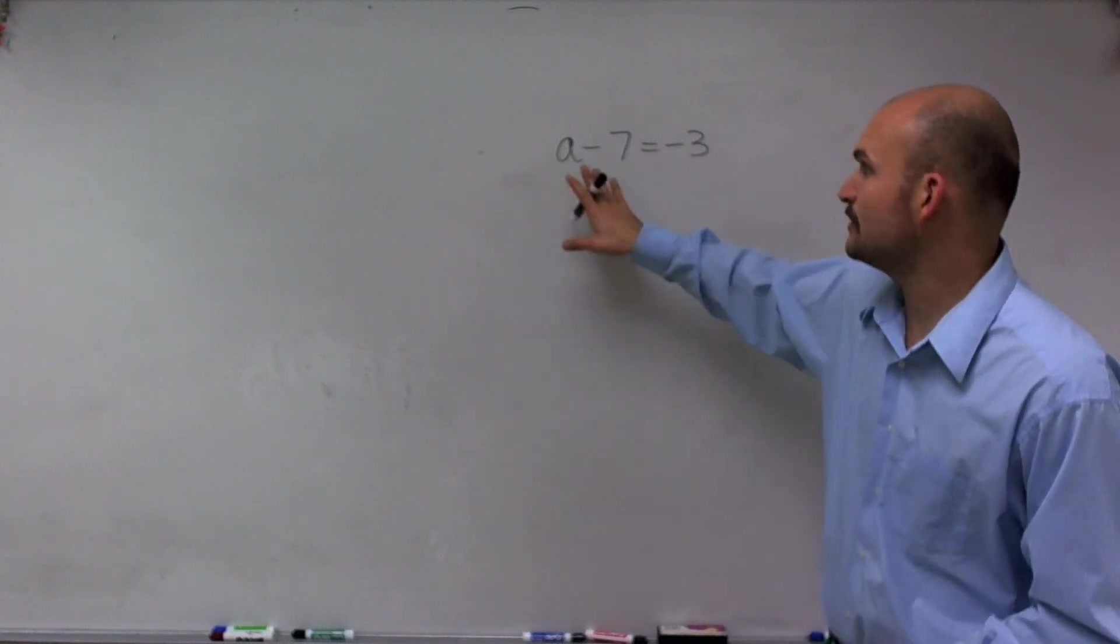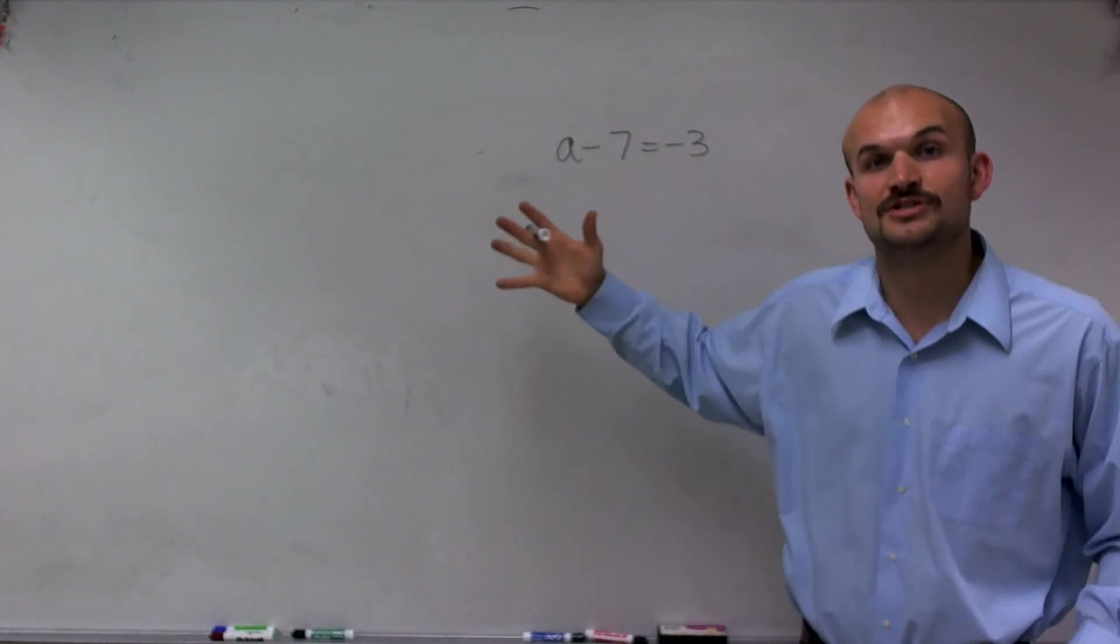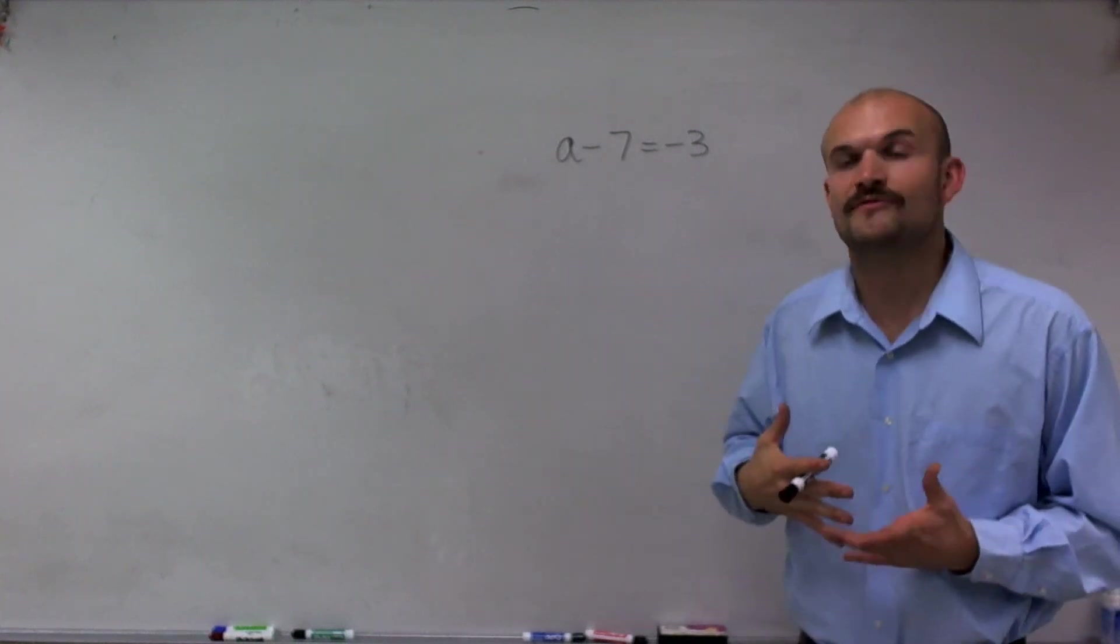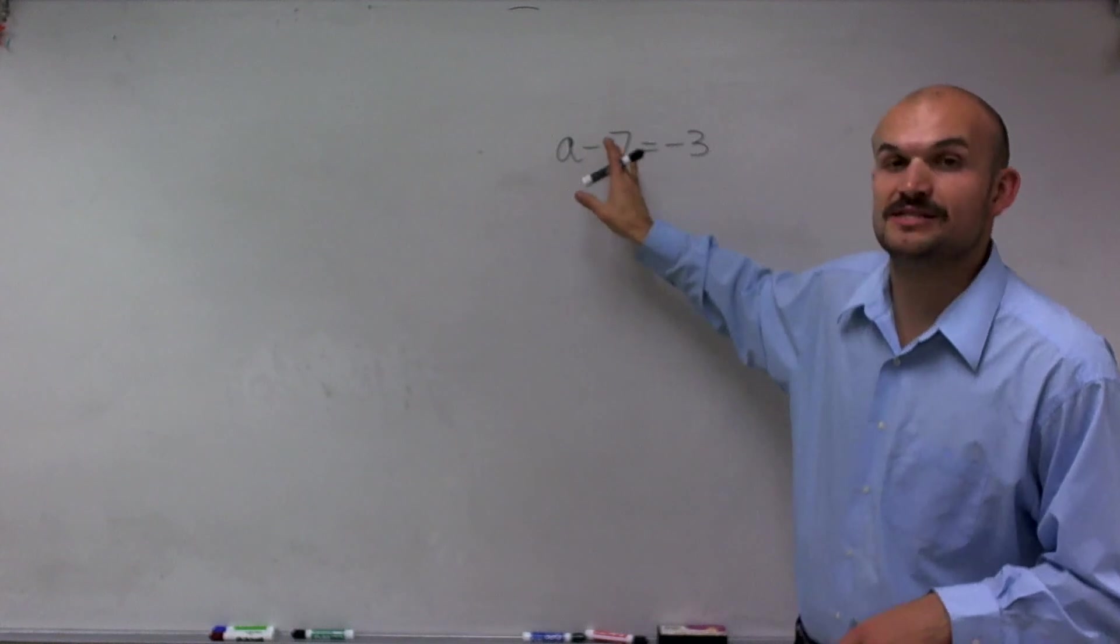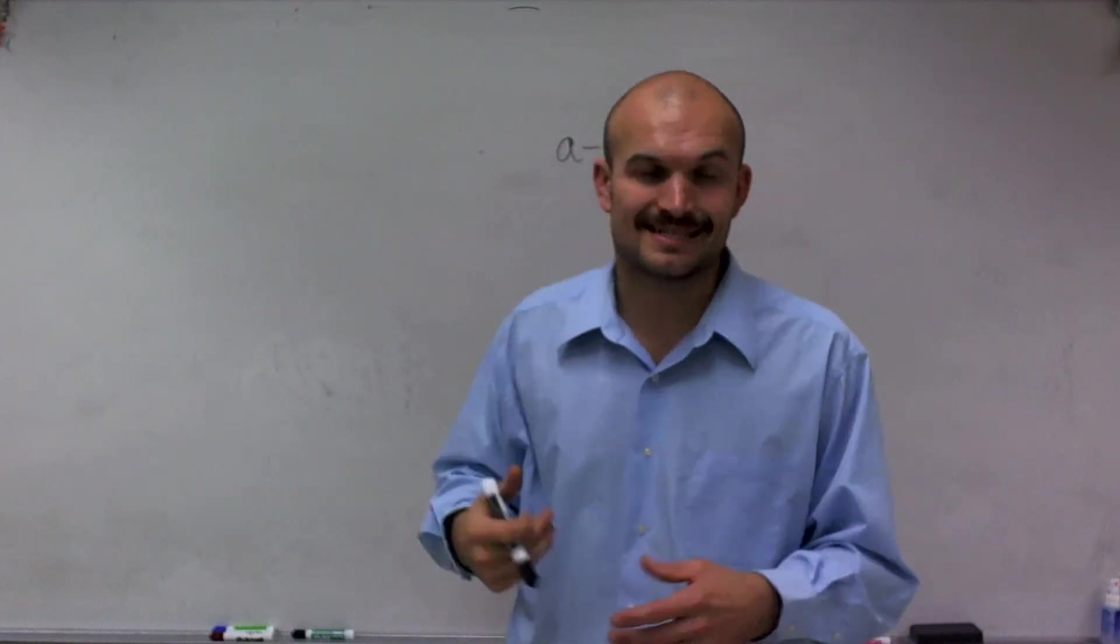So what we want to do is isolate that variable a. And to do that, we want to undo everything that's happening to the variable. So I look at the variable and I notice that my variable is being subtracted by 7. So to undo that, I'm going to have to add 7.